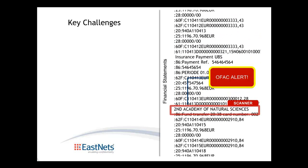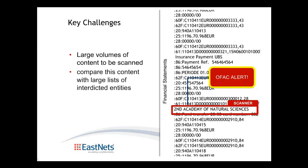The speed of execution requires the latest scanning technologies to be implemented at several levels: the ability to handle large volumes of content to be scanned — messages, customer databases, customer or company names — and the ability to compare this content with large lists of interdicted entities. These lists of blacklisted entities, politically exposed people, and internal lists overlap at times and evolve rapidly. There is also the ability to link lists together and recognize in an automated fashion when a given name appears in several lists.